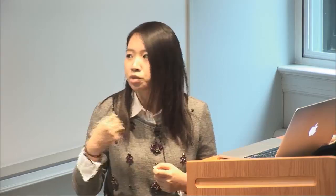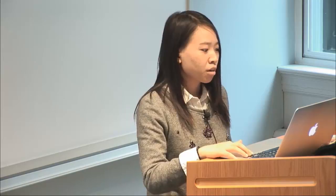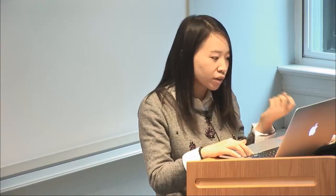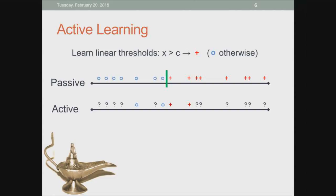I'll show a very simple example of active learning where we just want to learn a linear threshold in a one-dimensional space. The passive learning way is: you have some labeled data as circles and pluses, then train a classifier and find the threshold in the middle. In active learning, we have an unlabeled pool and actively query the useful labels we want — for example first figuring out one point is plus, then querying the other side to find a circle, and concluding the threshold must be in the middle. By four labels versus fifteen labels, we learn this very simple linear threshold.